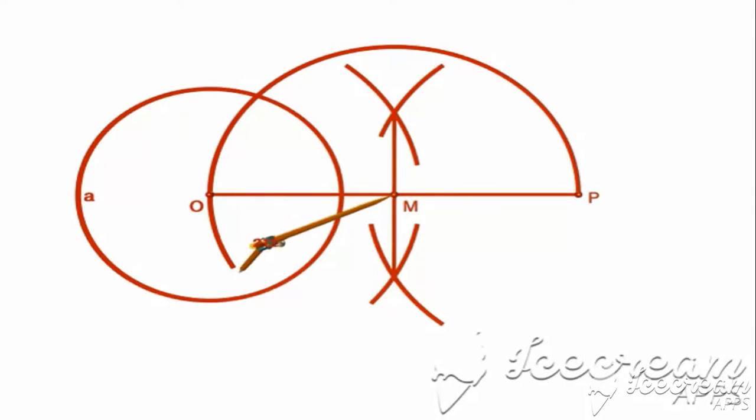M is center, O M equals to M P radius, draw a circle which intersects previous circle at A and A'.